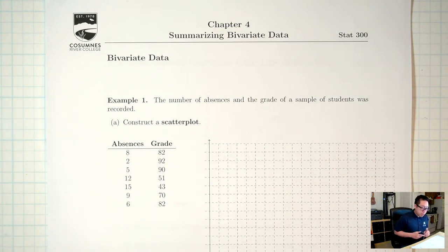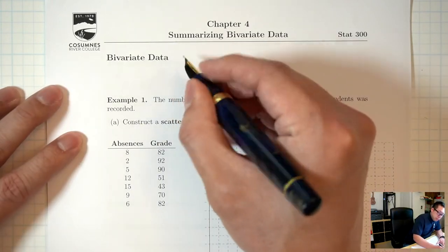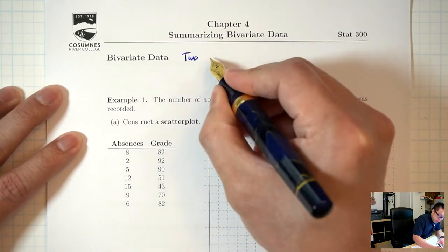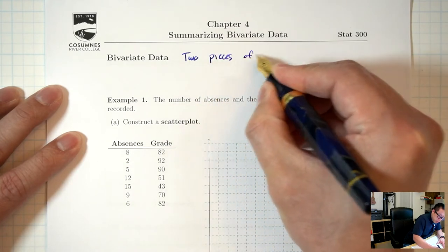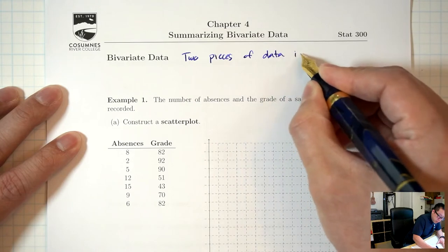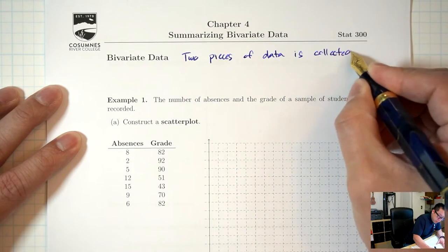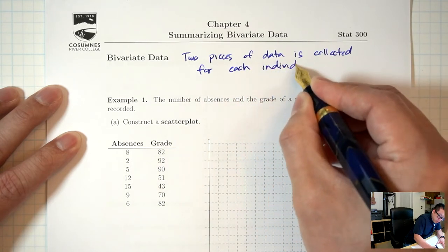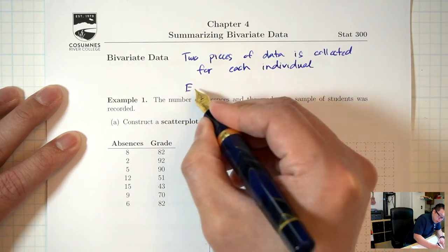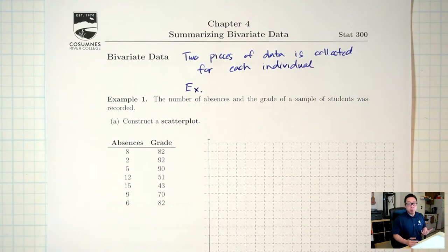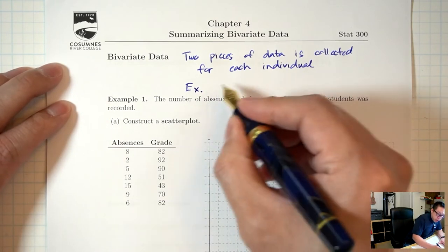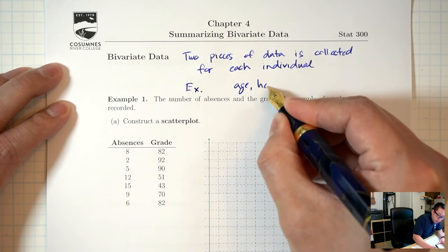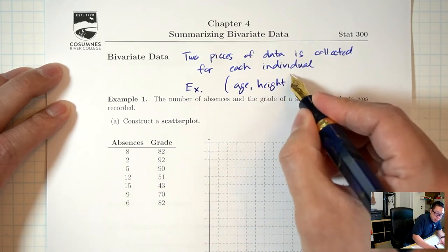These are going to be numbers. Let me introduce the term bivariate data. Bivariate data means we're going to collect two pieces of data from each individual, and usually we pair them up as an ordered pair, like x, y coordinates.